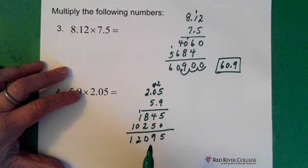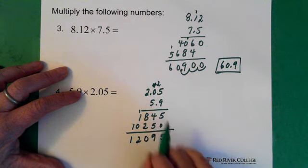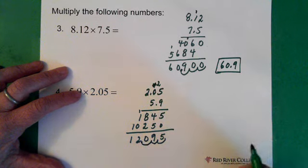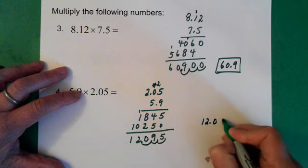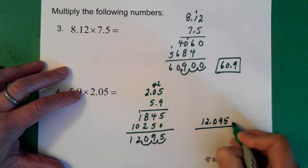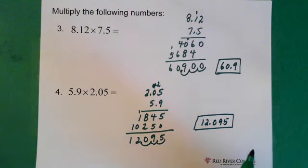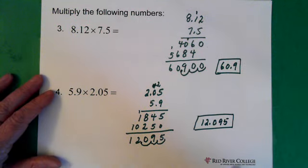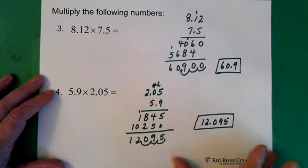Now we count our decimal places. We have 3 decimal places up here. 1, 2, 3. So we go back 1, 2, 3 decimal places. So our answer then is 12.095. And in this video I haven't been paying any attention to sig figs. So I'm basically just talking about the multiplication of these numbers. And if you were in a class where you needed to be paying attention to sig figs, then your answer would be a little bit different. Slightly. But don't worry about that for now.